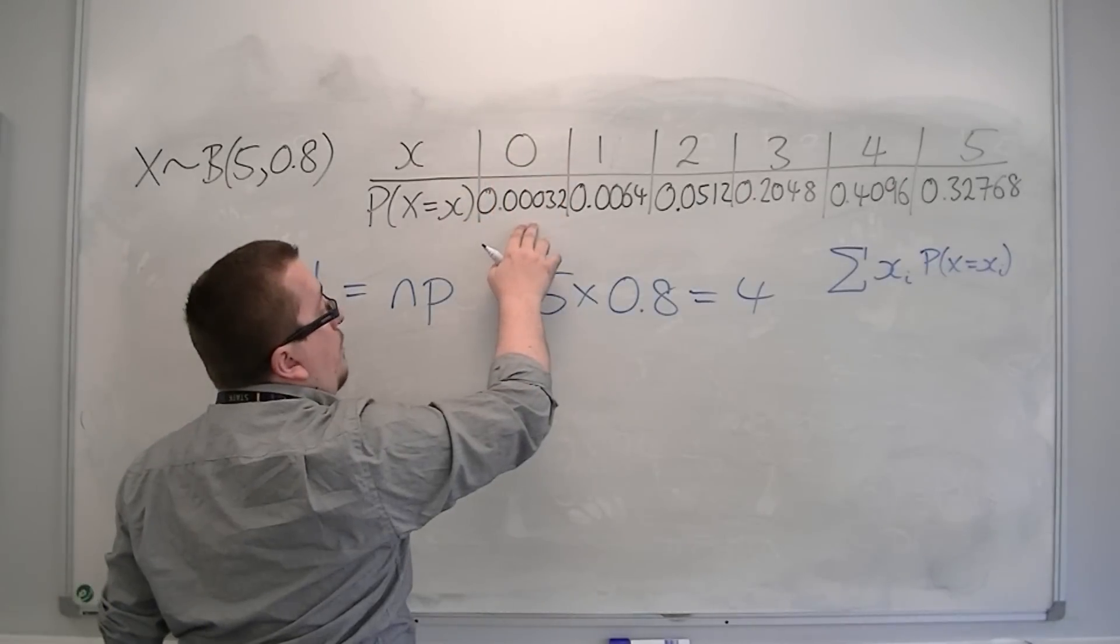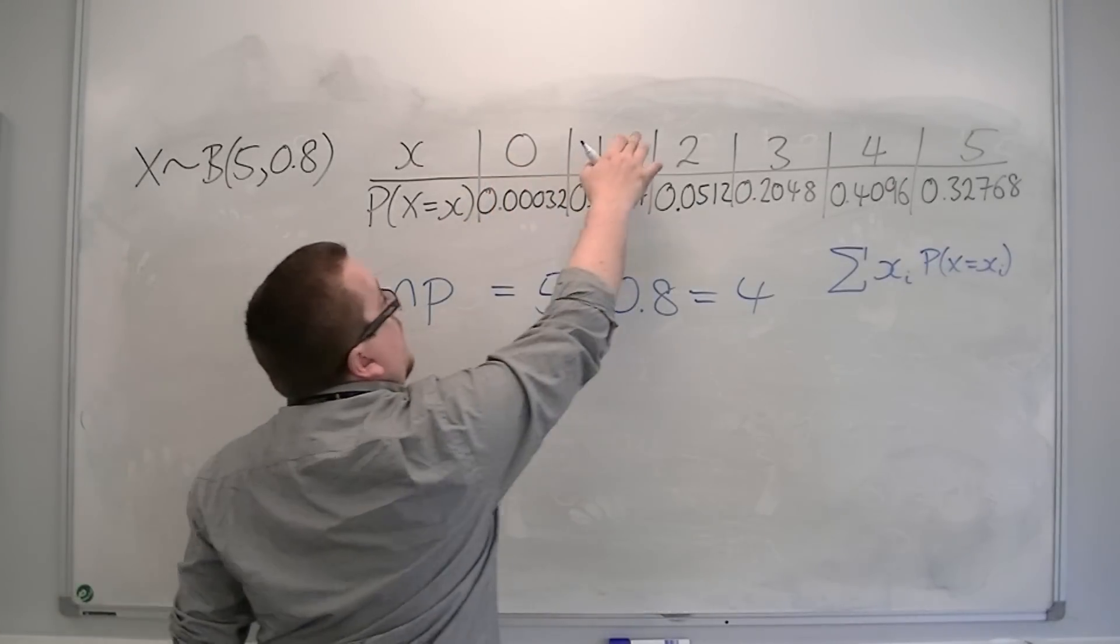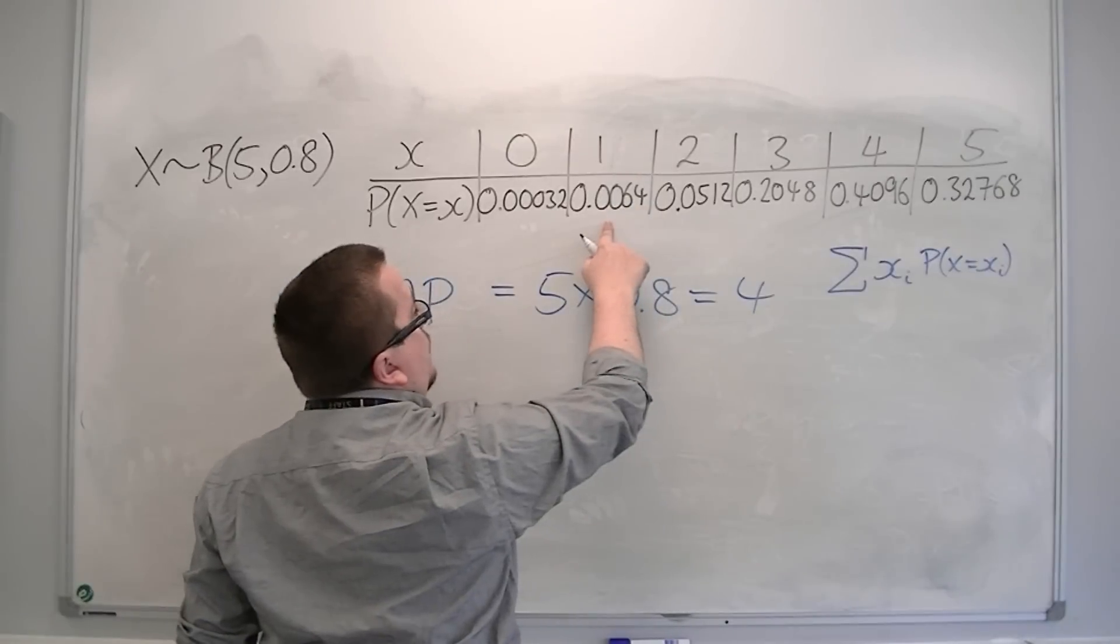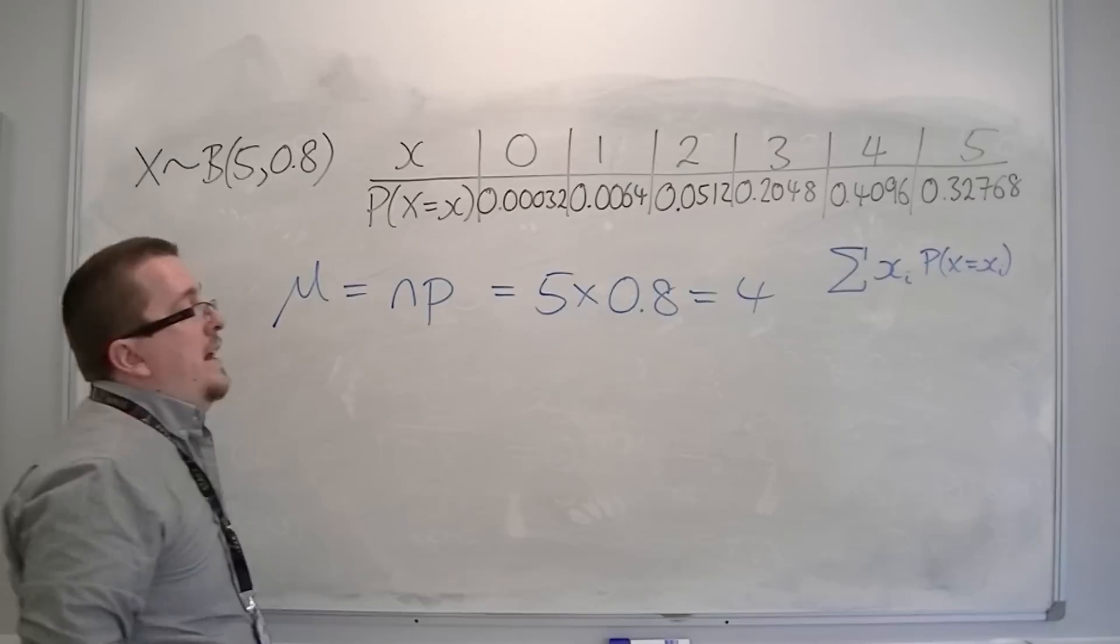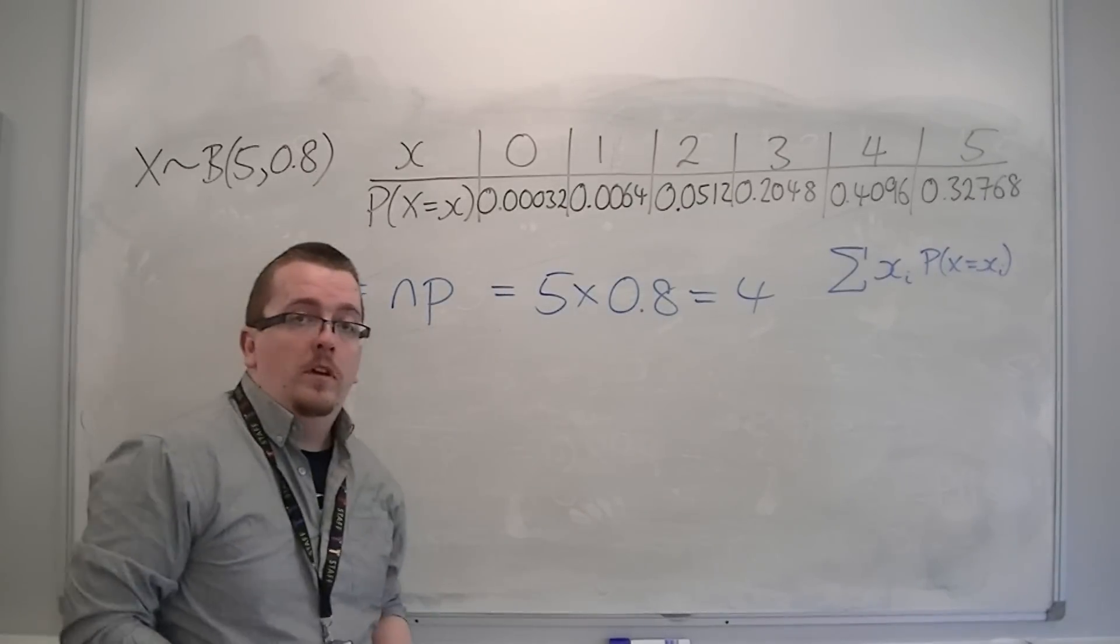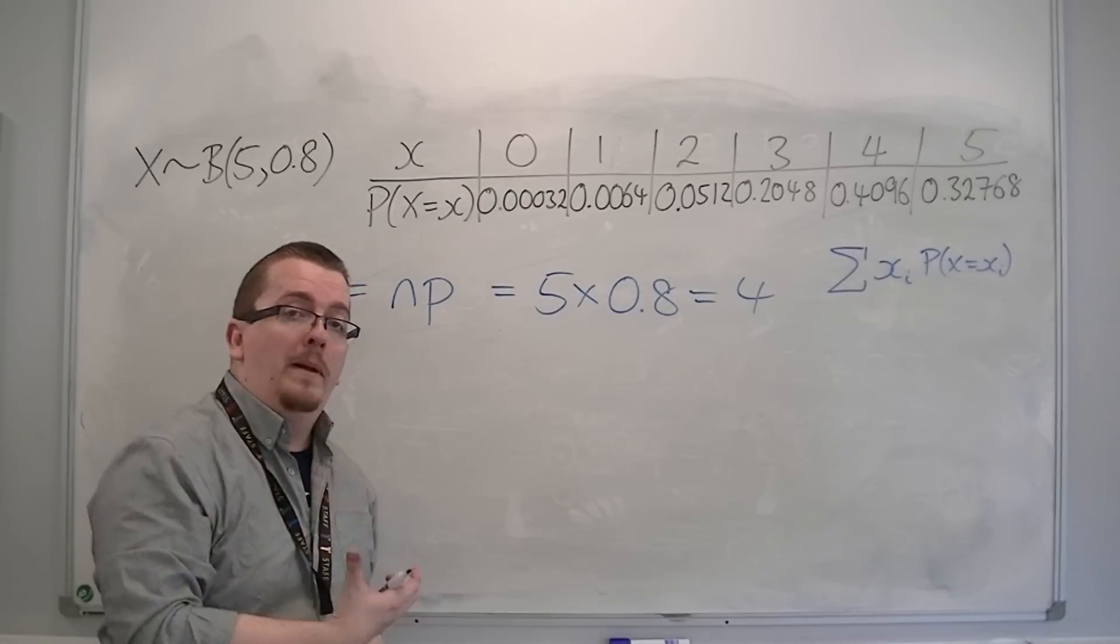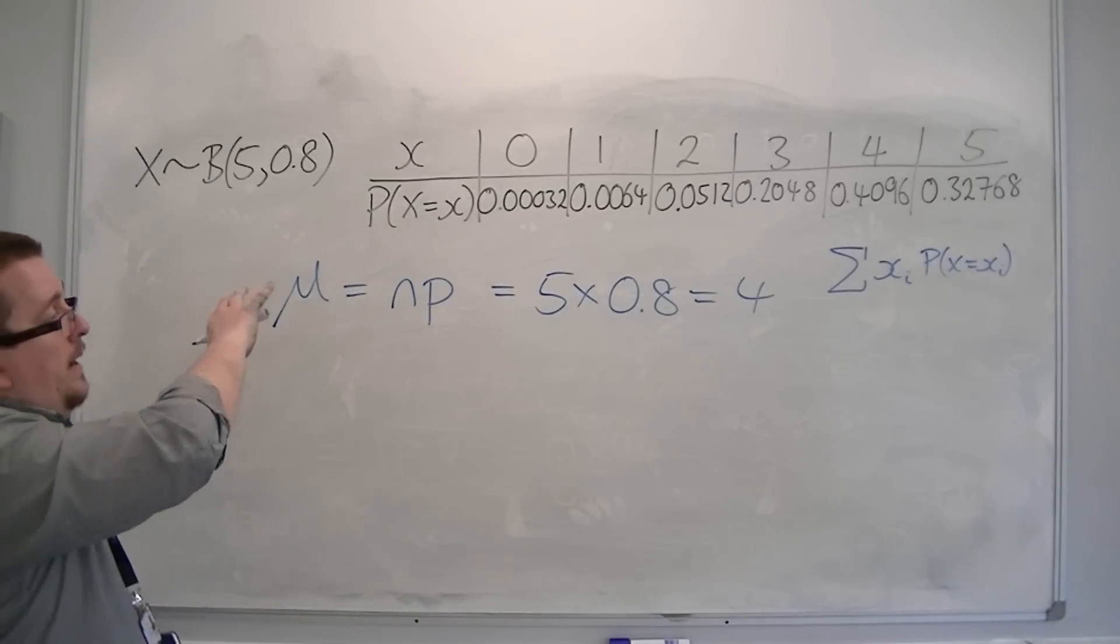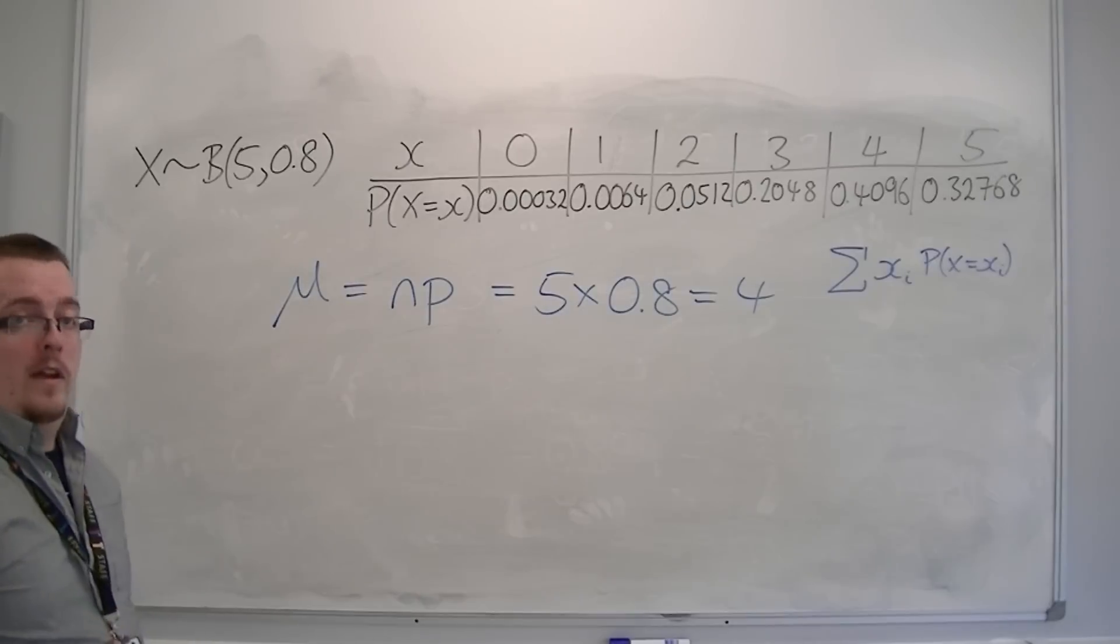You multiply 0 by 0.00032 plus 1 times 0.0064, add them all together and then you get 4. That's how you can work out the probability of a discrete distribution like this.